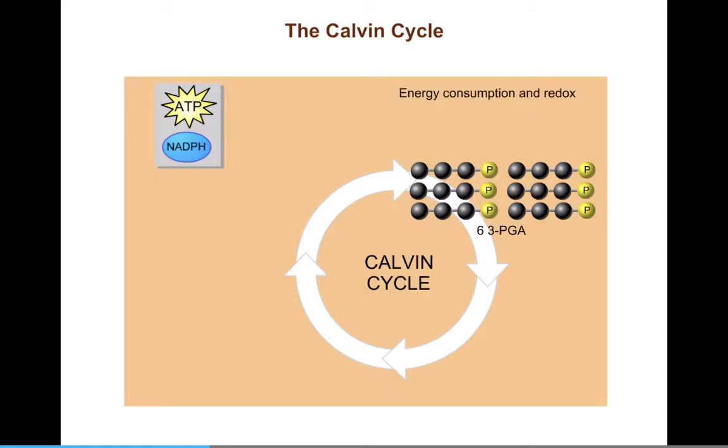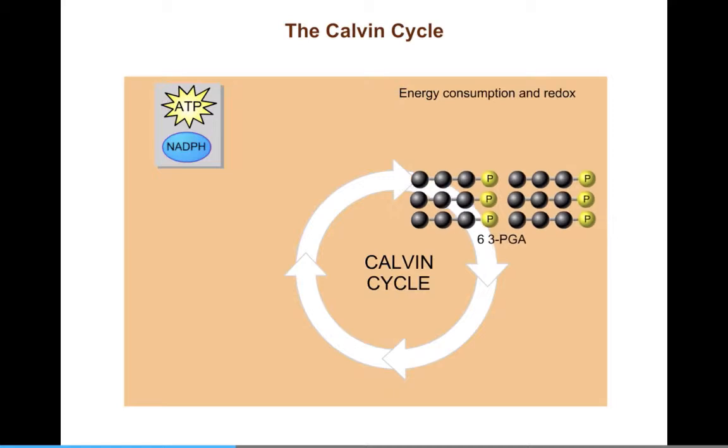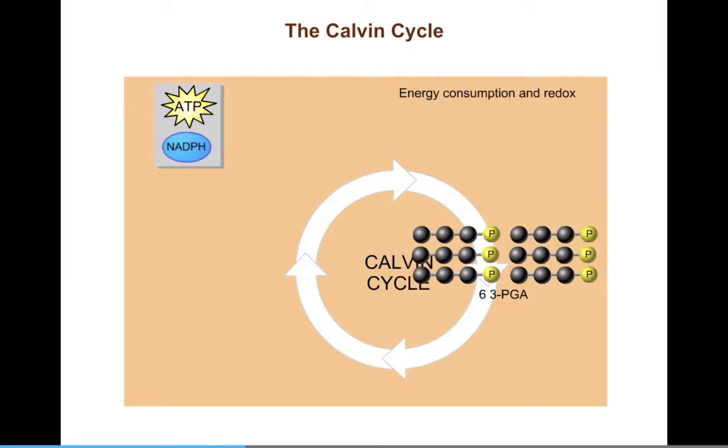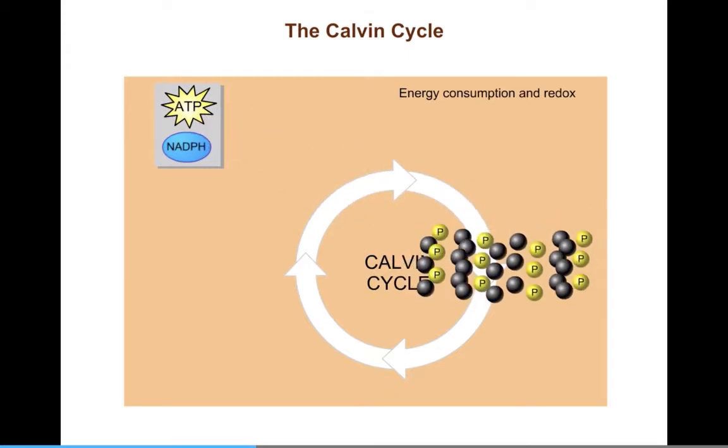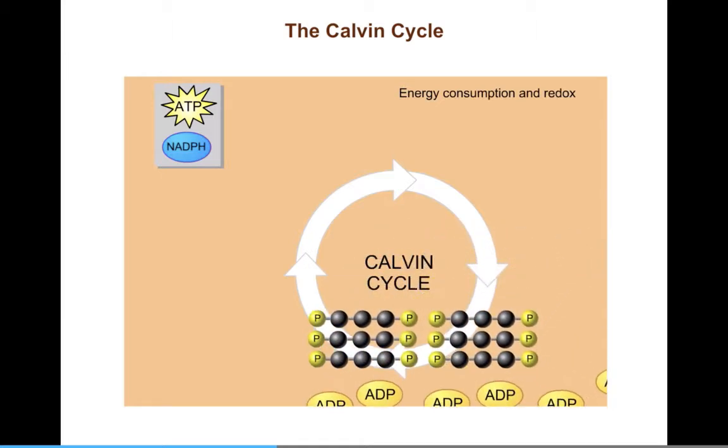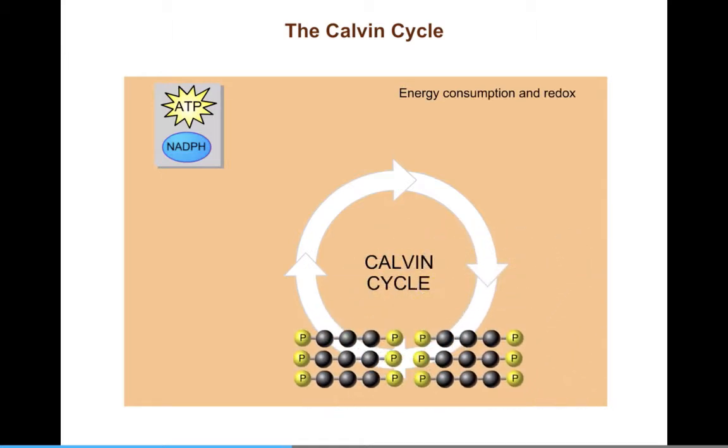In the next two reactions, products from the light reactions are used to boost the energy of these three-carbon molecules. First, six ATP molecules contribute high-energy phosphate groups so that each three-carbon molecule receives an additional phosphate group.